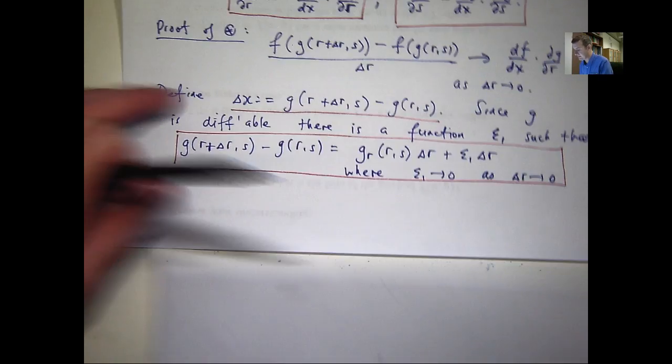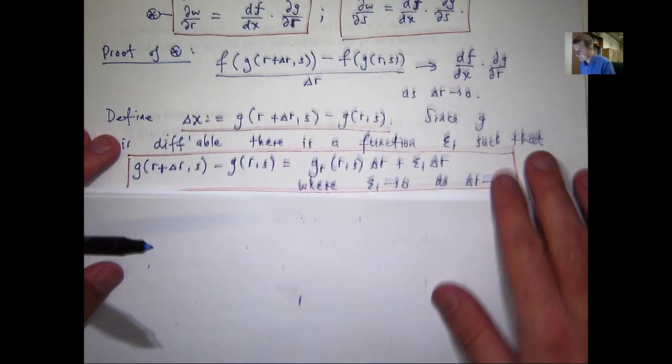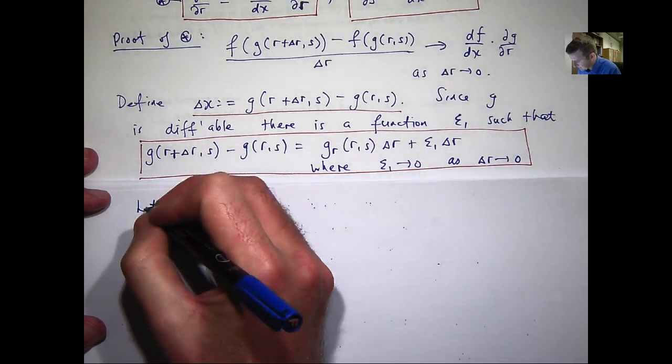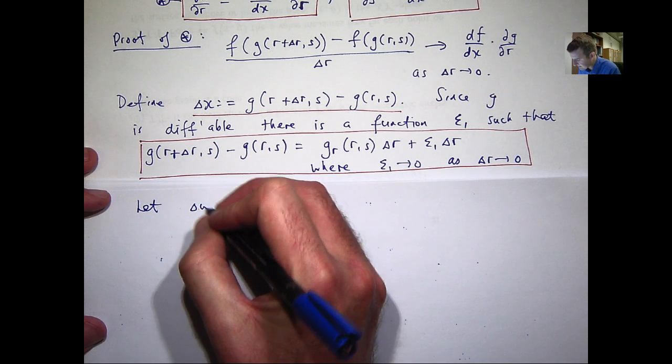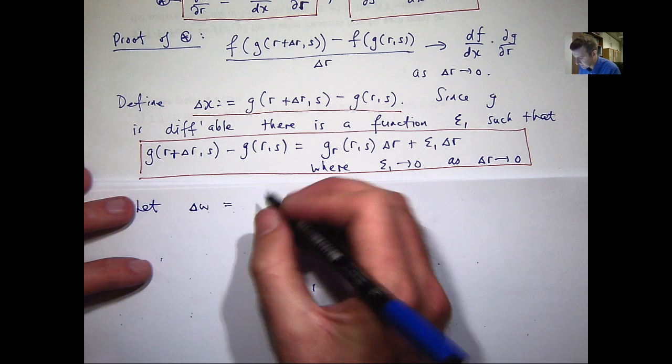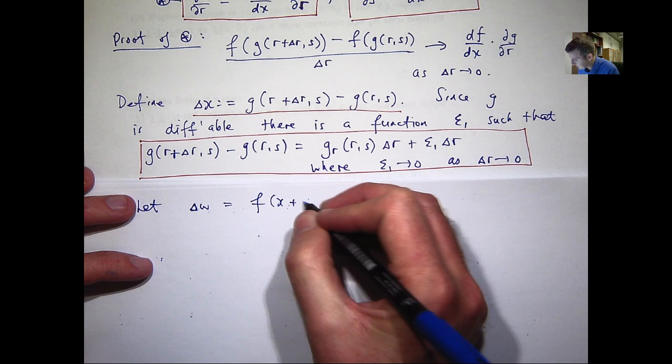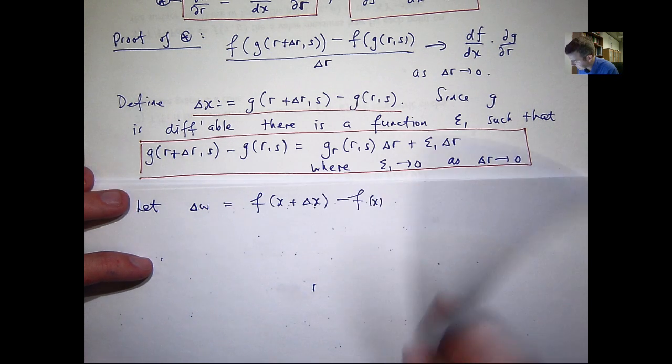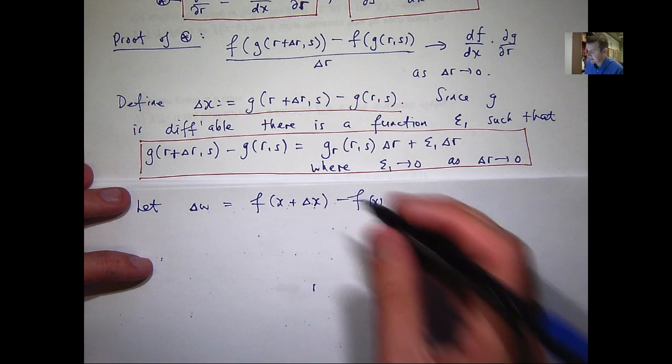Okay. All right. So, the next step in the proof, we're going to introduce the following notation, delta w. That's just going to be the following difference, where the delta x is defined up here.